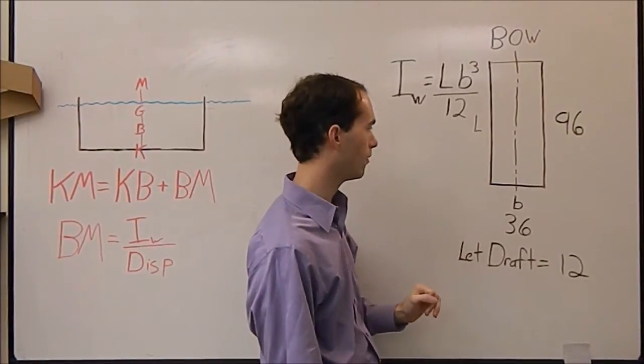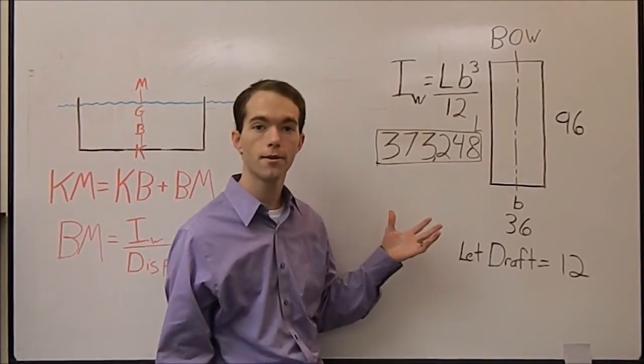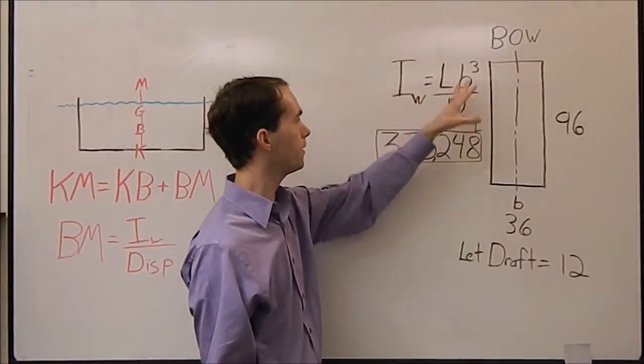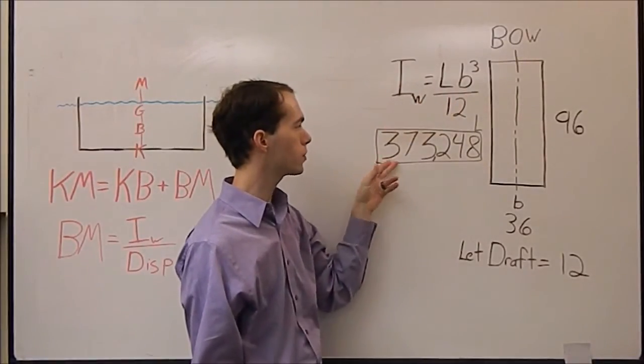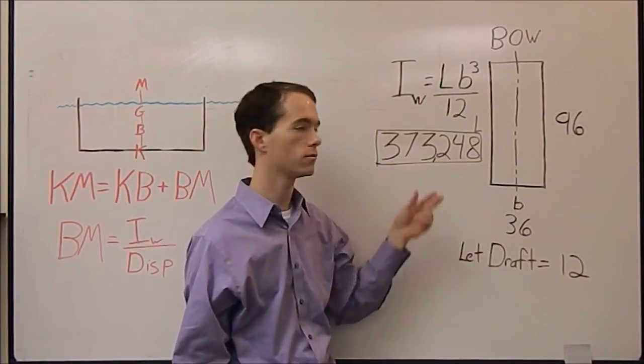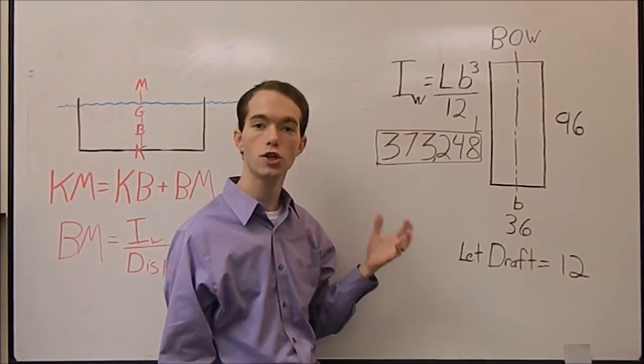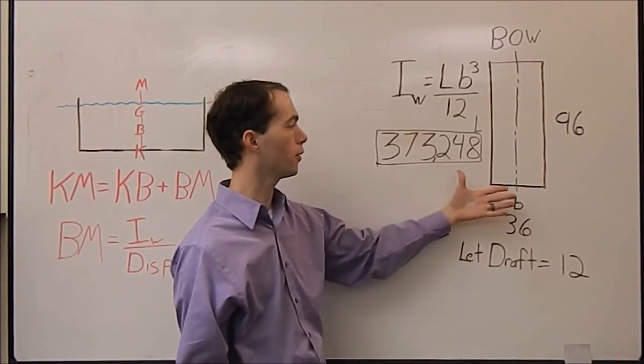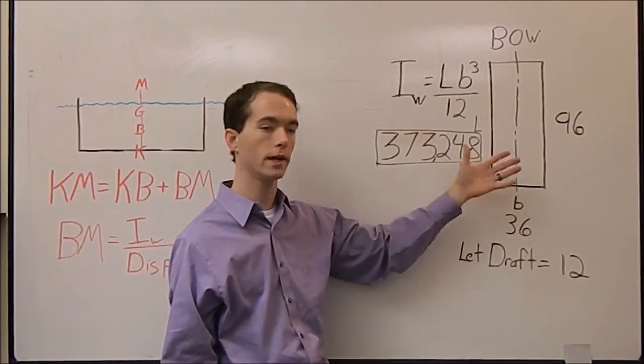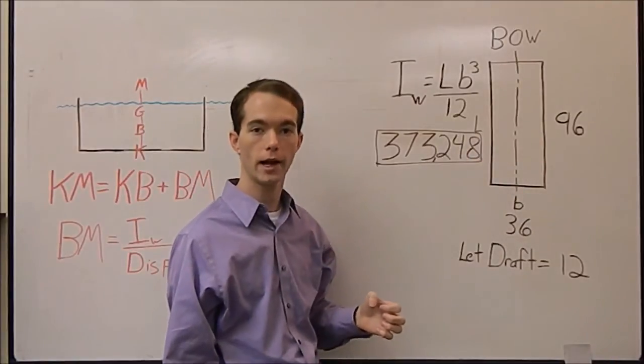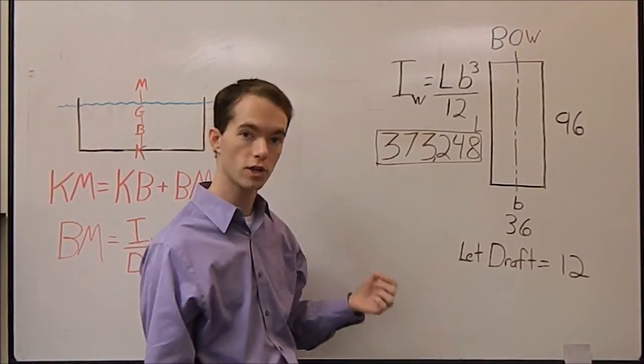And our draft is going to be 12. We do a little math and we figure out that the inertia of the water plane is 373,248. That's a huge number, which means there's a lot of resistance to rolling around your long axis of your boat, which is good because we want it to be nice and stable.